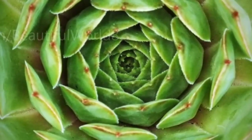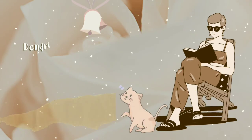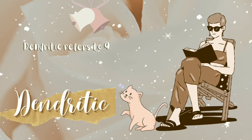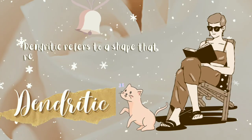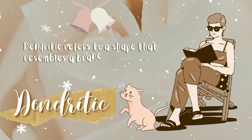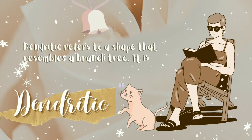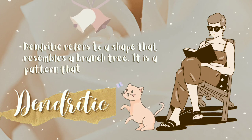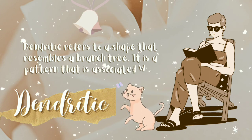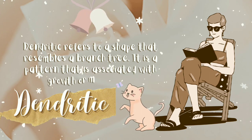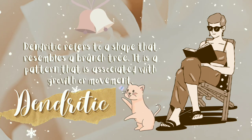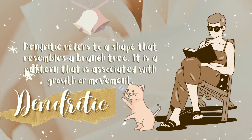Finally, let's discuss dendritic patterns. Dendritic refers to a shape that resembles a branching tree. It is a pattern that is associated with growth or movement. These are the examples.